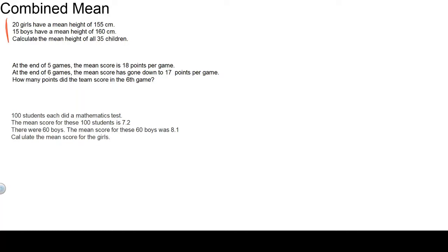Let's look at the first sentence to work out the total height of those 20 girls. Just do 20 times 155. That gives you 3,100 centimeters. Same for the boys. Total height: 15 times 160.